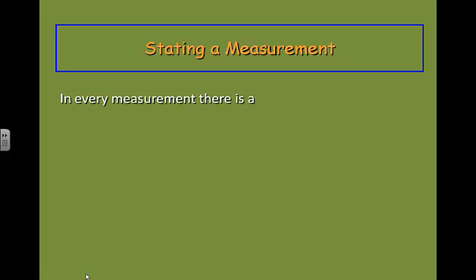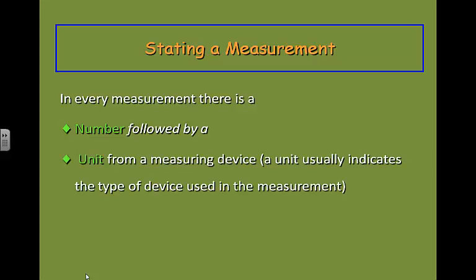When we state some sort of measurement, we know that we've got a number. But a number is just that unless it's followed by some sort of unit from a measuring device, be it a balance or a scale or a graduated cylinder, because it really tells us what type of device we use to create that measurement.